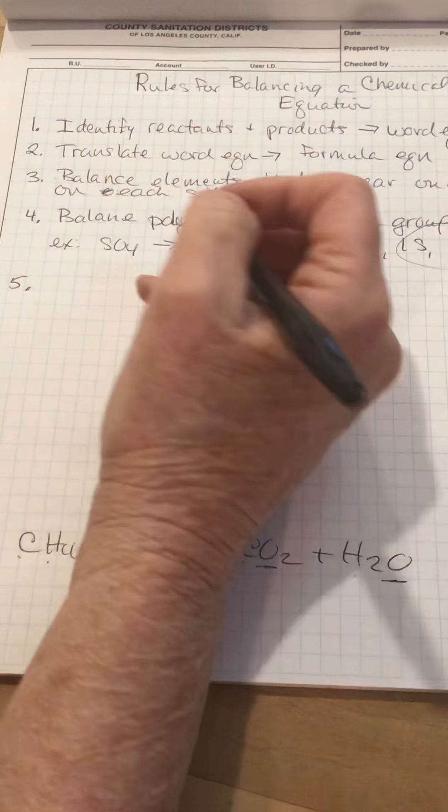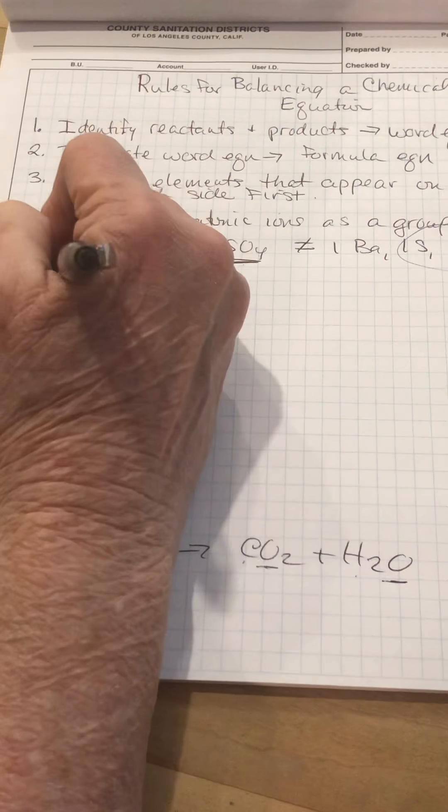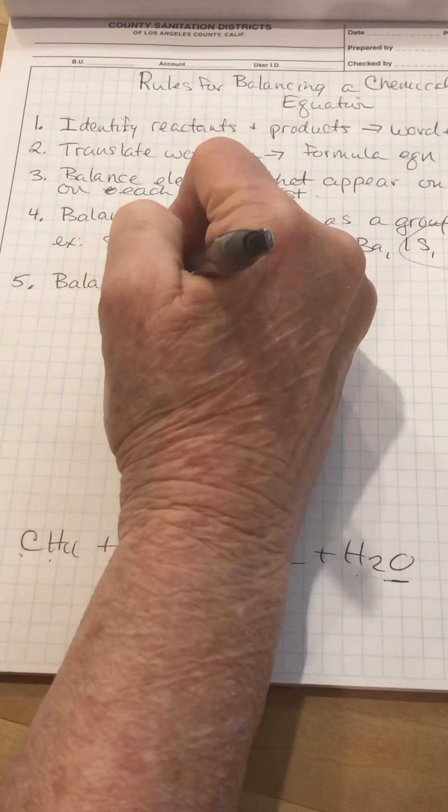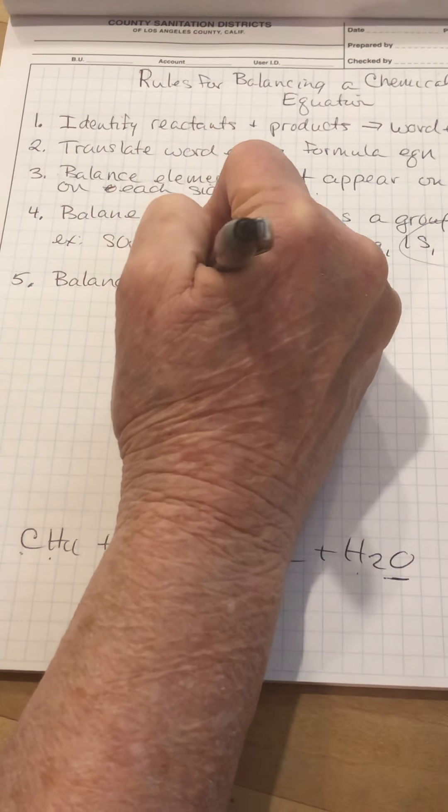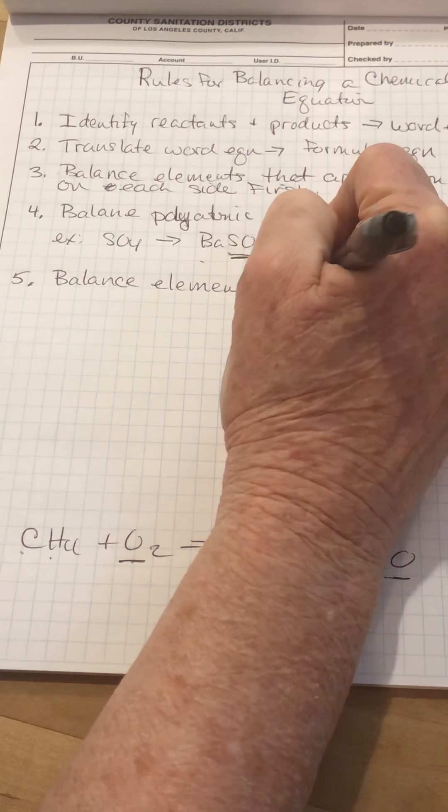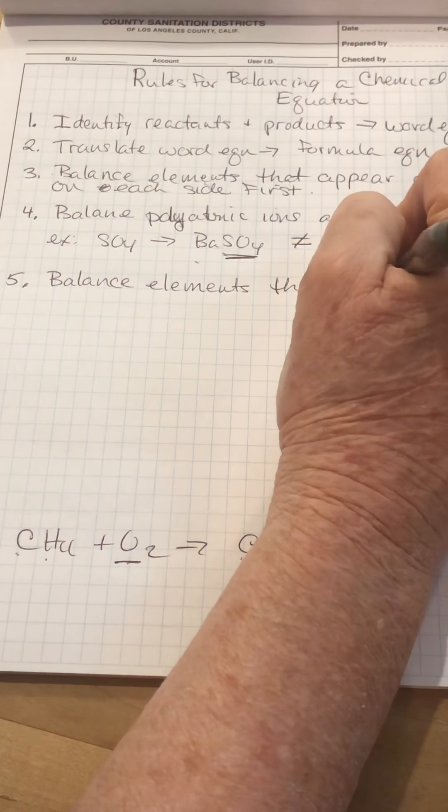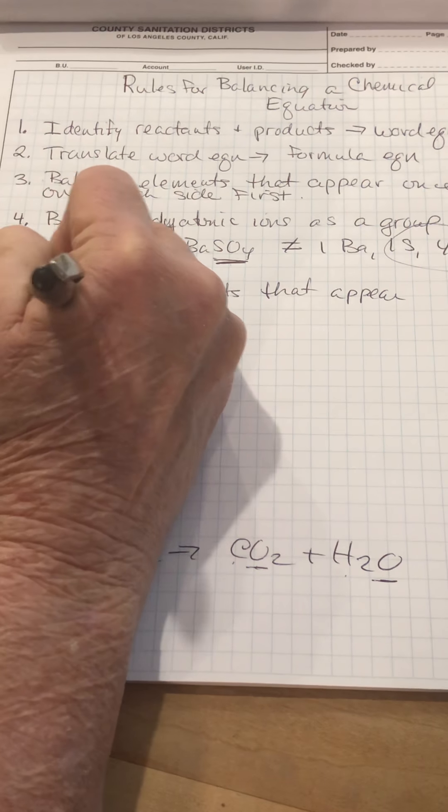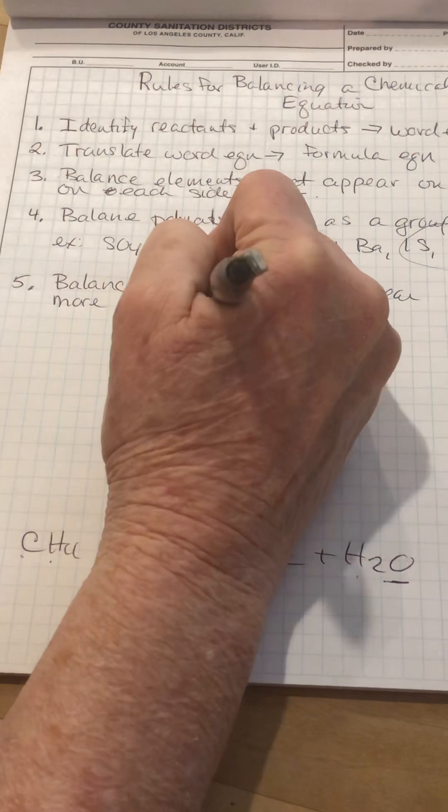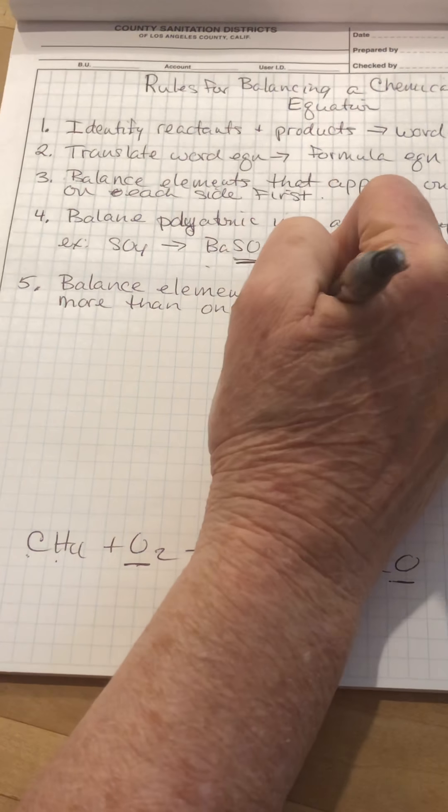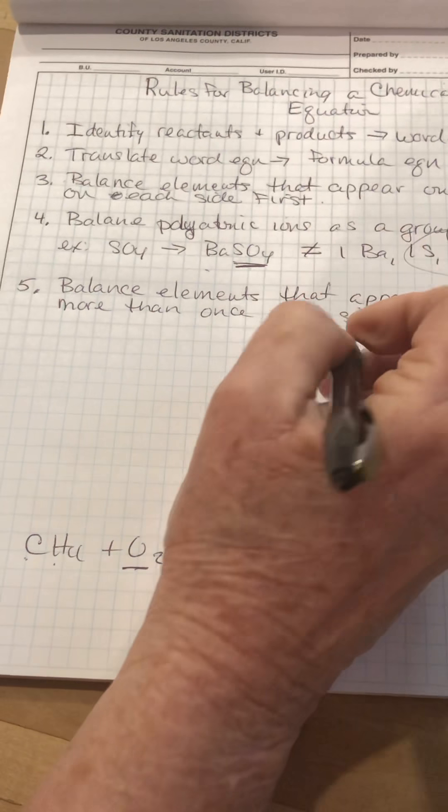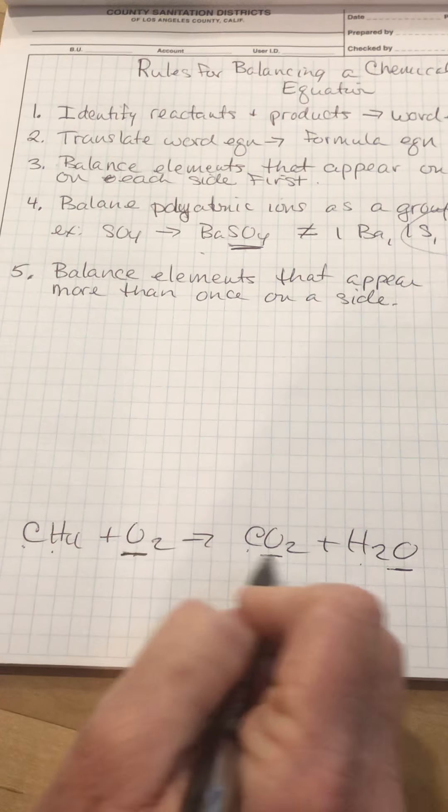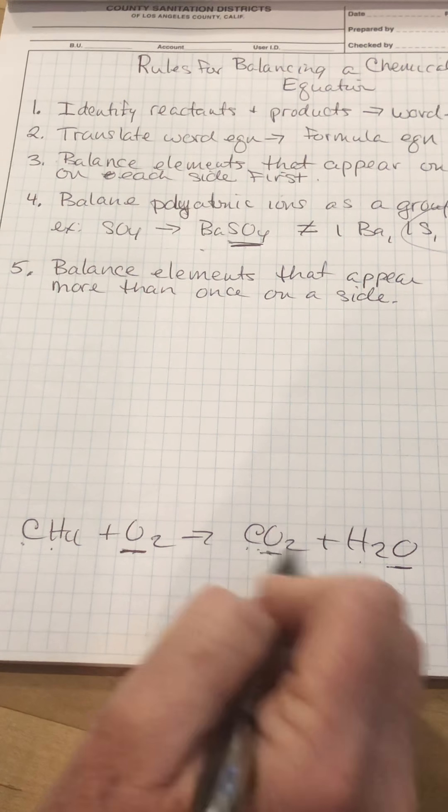Not quite the last thing. Balance elements that appear more than once on a side. So if we go back down to this equation I wrote earlier, this is where you deal with oxygen, because it's appearing twice on the product side.